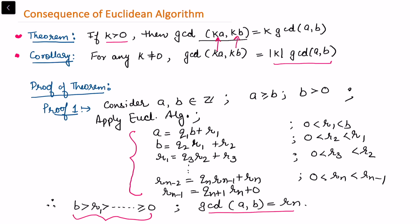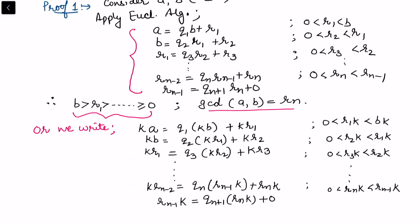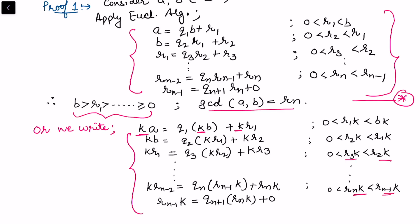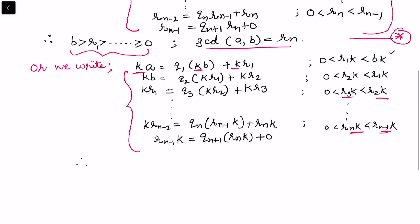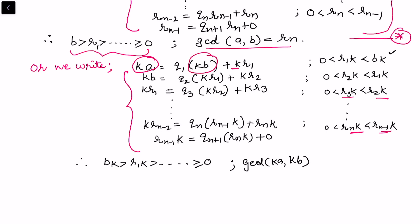Now I require the gcd of ka and kb, so I will multiply k on both sides. Following the previous step — let's call it star — and multiplying k on both sides similarly in the remainder, k appears throughout. Following the previous steps of the Euclidean algorithm, we directly see that the sequence of remainders bk > r₁k and so on is finite and terminates. So we get gcd(ka, kb), where these are the first two terms selected, and the remainder is r_n·k.